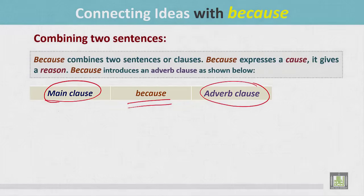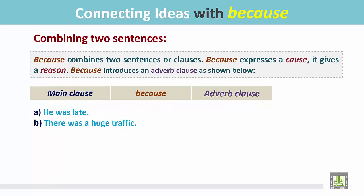Let's see the examples. A: He was late. B: There was a huge traffic. In these two sentences, the first one is the main clause. And in the second sentence, we find a reason for the first clause. There was a huge traffic. It was the reason.